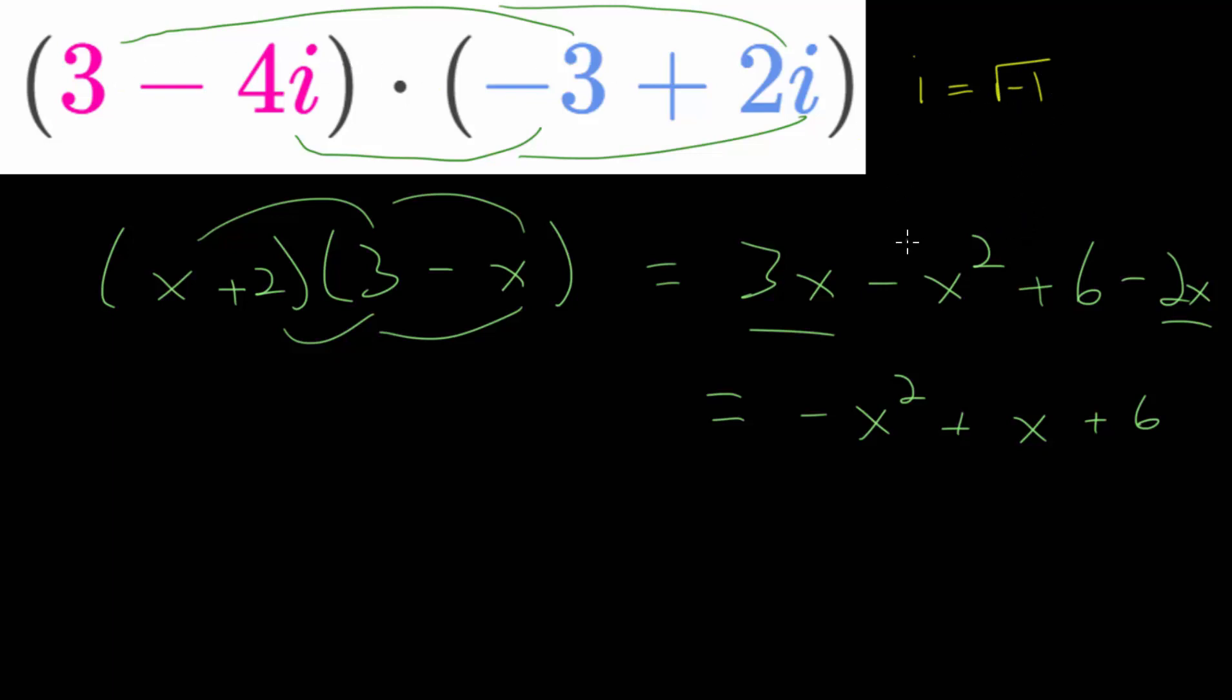But when we multiply these out, we multiply these two imaginary terms, minus 4i times by 2i, and we'll end up with an i times i, or i squared.